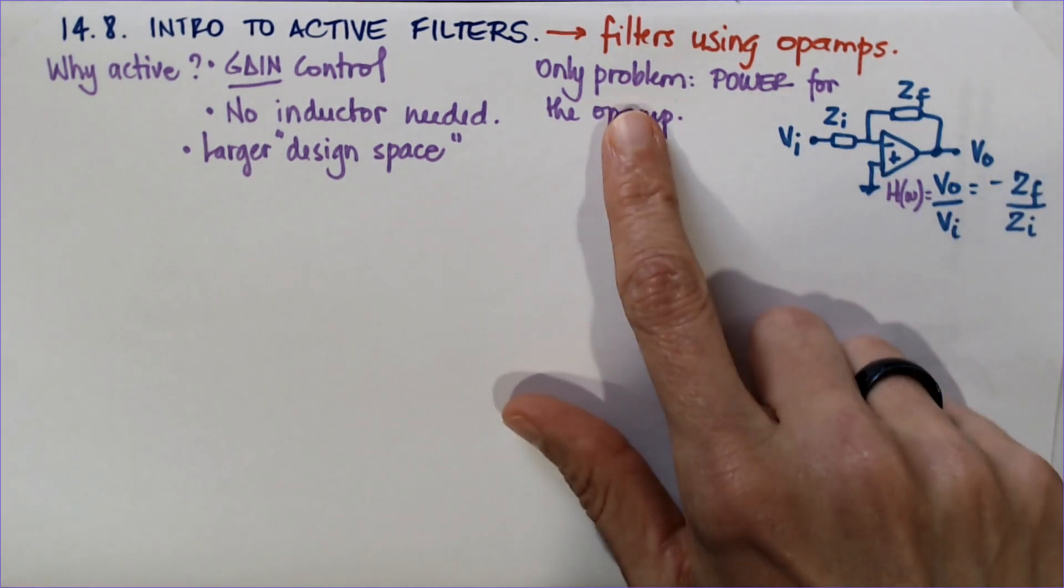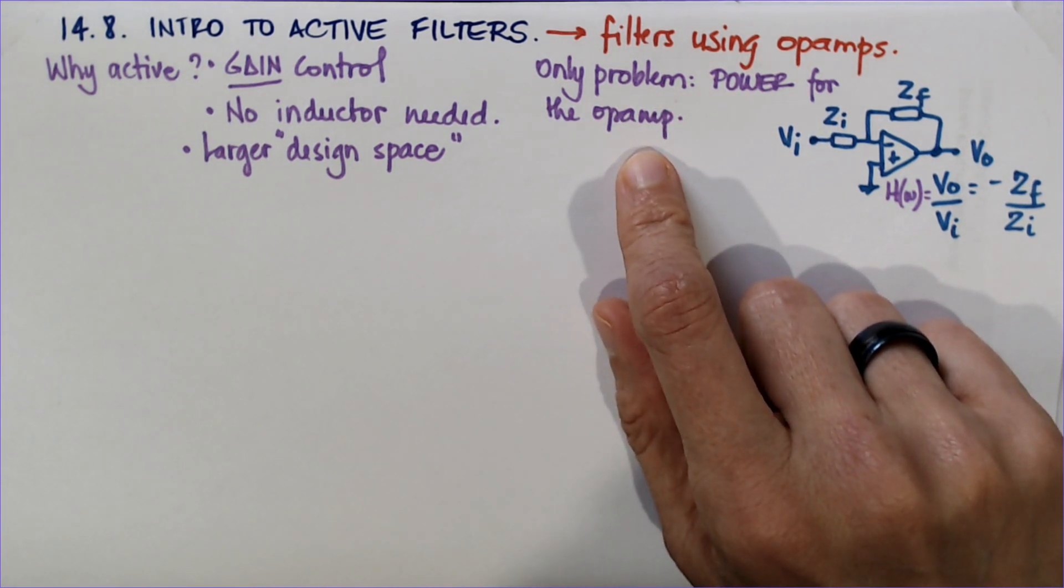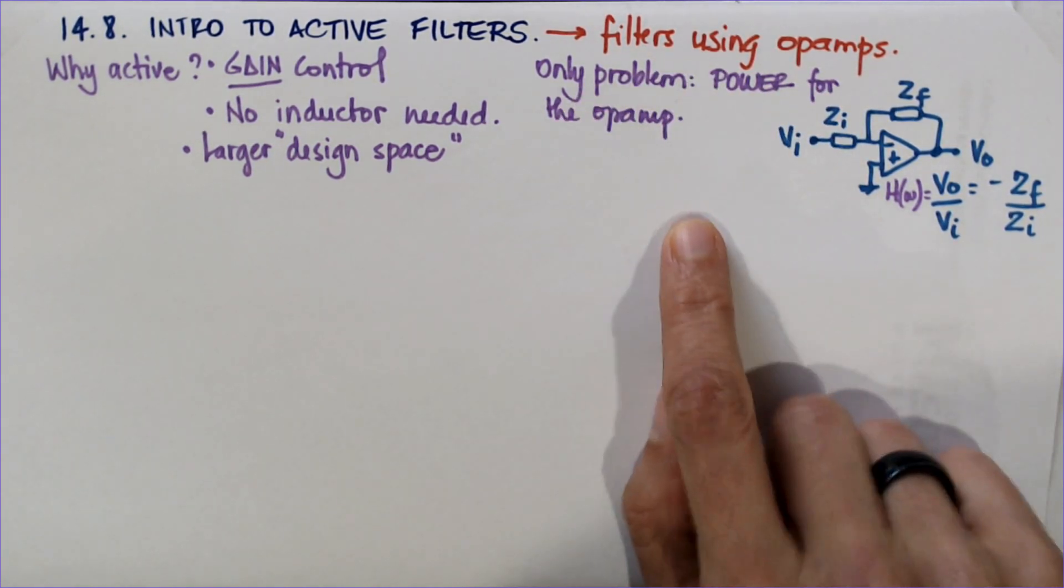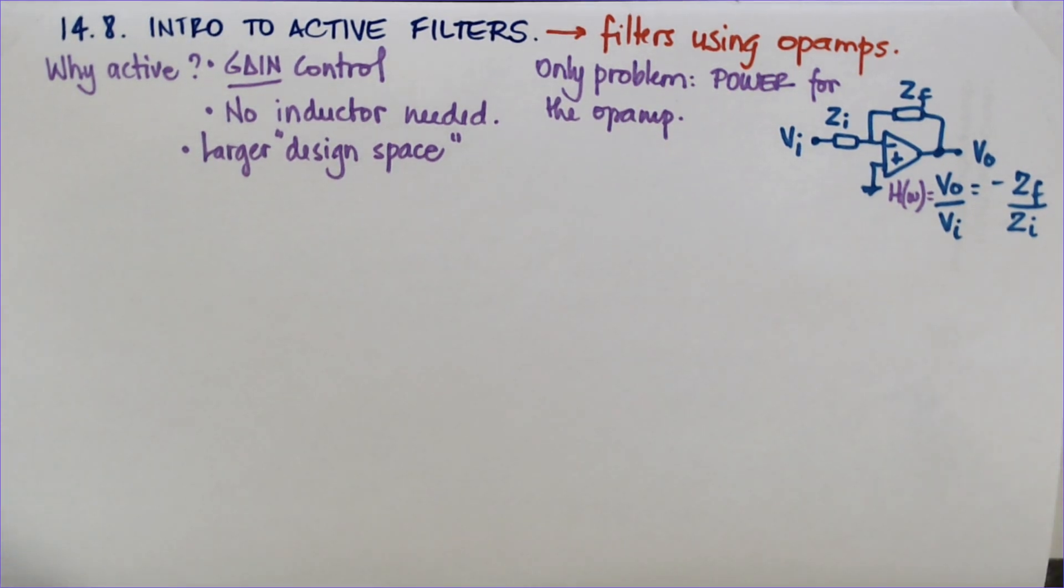The only problem is that you do need power for the op-amp. Often when you're designing a system like this you do have power available, so this small weakness is often disregarded in filter design.